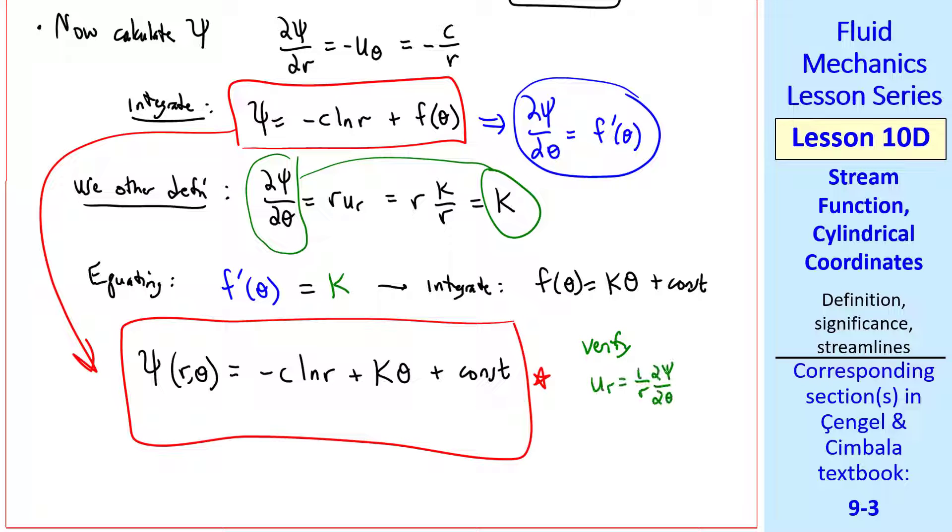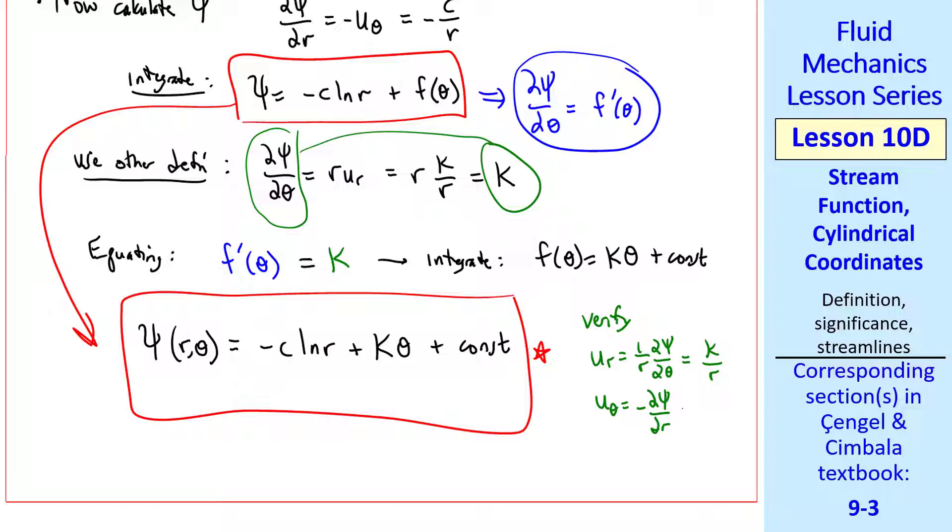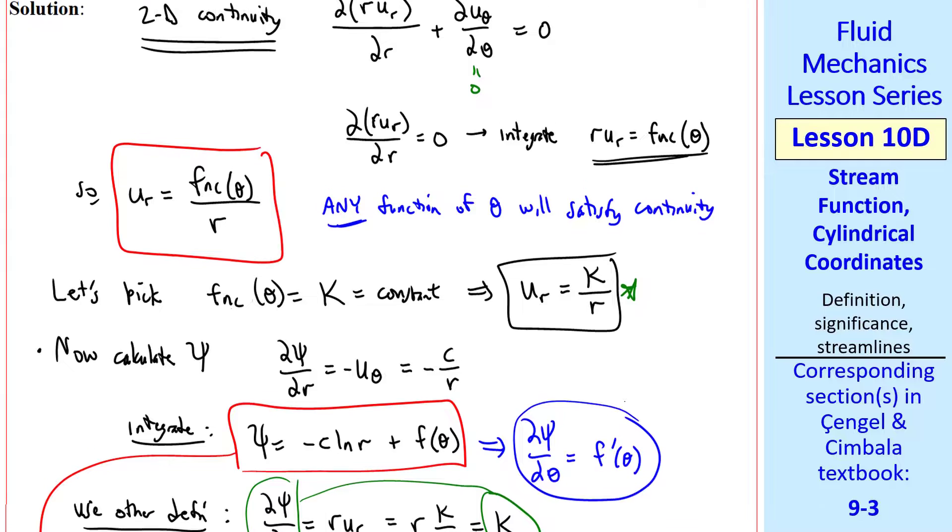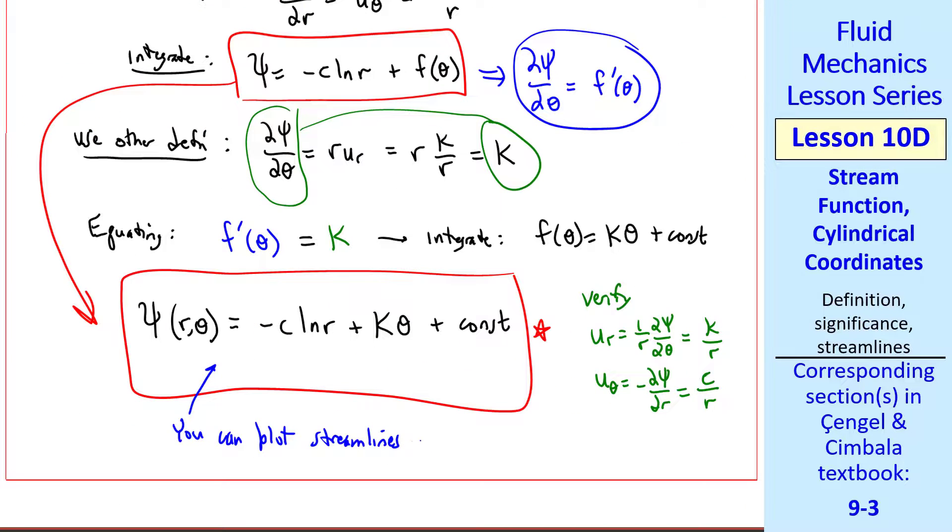You can verify that u_r is 1 over r del psi del theta. Turns out to be k over r, which agrees with this. And u_theta is minus del psi del r. Turns out to be c over r, which agrees with our given information in the problem statement. You can plot streamlines by choosing psi values and setting this constant to something and knowing these two constants as well. You're welcome to plot this to see what this flow looks like.